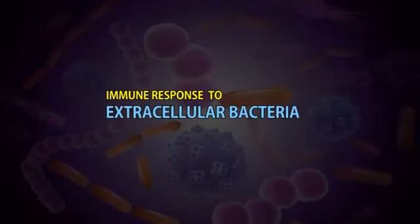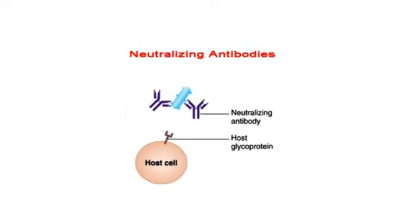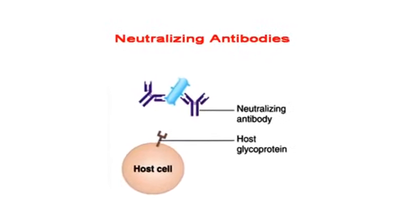Immune response to extracellular bacteria. Extracellular bacteria are those which have not entered the host cells. Such bacterial infections are mainly counteracted by antibodies. These antibodies are secreted by plasma cells present in the lymph nodes and other secondary lymphoid organs present in the submucosa of the respiratory and gastrointestinal tracts. The antibodies secreted by these plasma cells are the main components of the humoral immune response against extracellular bacteria. Antibodies use different mechanisms to eliminate bacteria, and can neutralize bacteria, thus preventing their attachment to host cells.